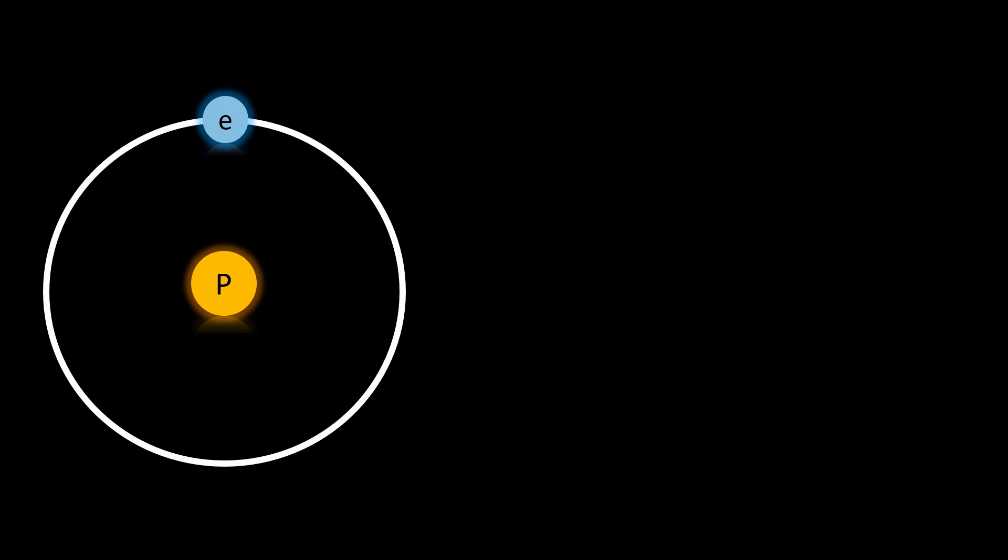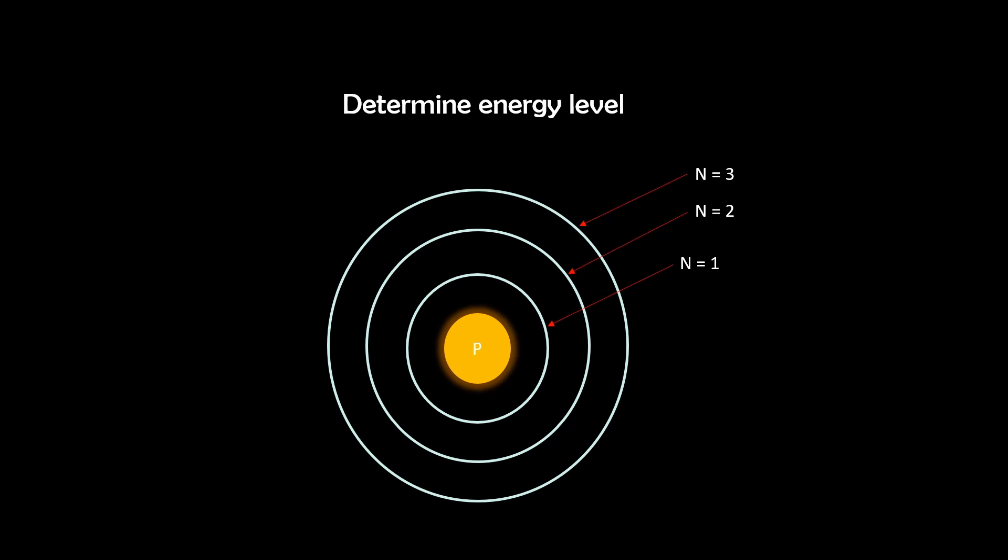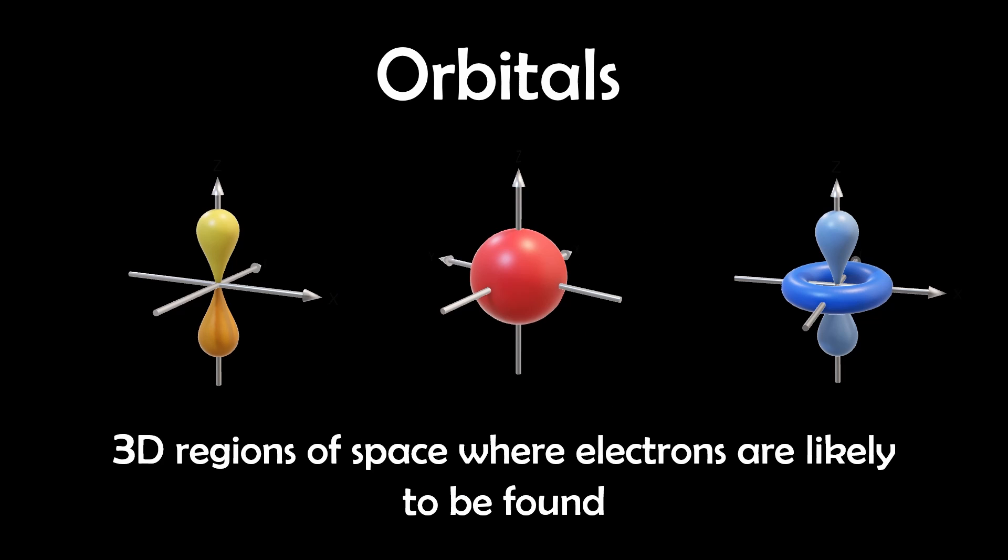The Schrödinger equation helped our understanding of electrons. Rather than pinpointing an exact location, the equation allows us to map out the electron densities as well as determine its quantized energy level. And solving these electron densities are how we get atomic orbitals, which are 3D regions of space where electrons are most likely to be found.